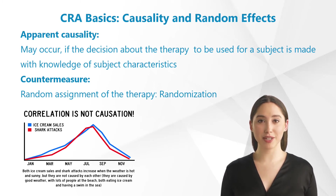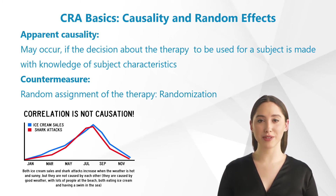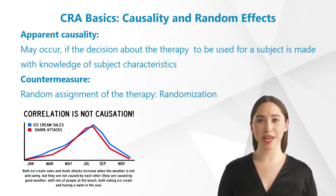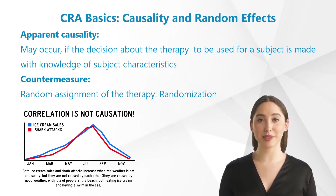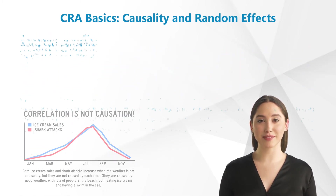When determining the state of the subjects after treatment, the condition will be better in the therapy group than in the placebo group, because the relief of suffering from high blood pressure entails a better general condition. The success of the therapy would therefore only be apparent. In order to avoid this effect, subjects are randomly assigned to the different study arms.